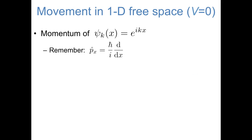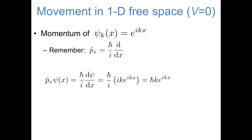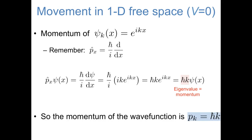Next, let's look at the momentum of e^(ikx). The one-dimensional momentum operator is ℏ/i times the first derivative, equivalently written as −iℏ times the first derivative. Applying the momentum operator gives ℏ/i times ik·e^(ikx). The i's cancel, leaving ℏk times e^(ikx), so the momentum eigenvalue — the momentum we would measure — is ℏk.